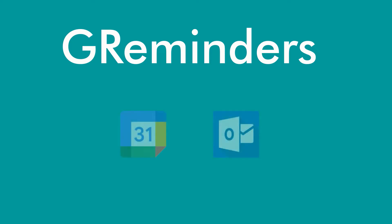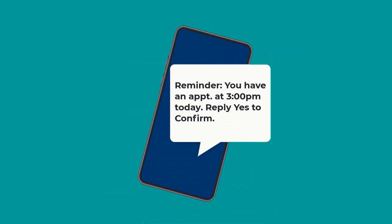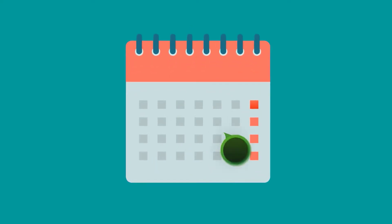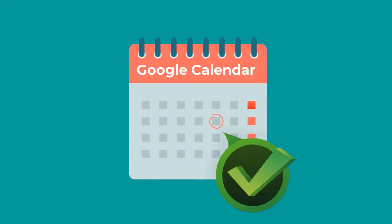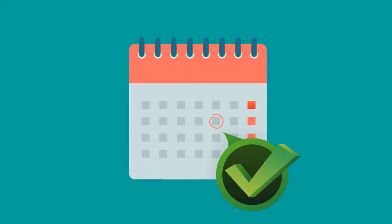G Reminders is a service designed exclusively for Google and Outlook calendar users. It allows you to send appointment reminders to your clients and allows your clients to book meetings directly onto your Google or Outlook calendar.